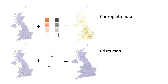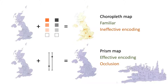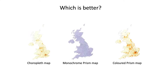So choropleth maps have a familiar encoding for numeric value; however, it is not the most effective. Prism maps, by contrast, use height to encode value, which is more effective, but the 3D effect can lead to occlusion. It is also possible to use both color and height to encode the values associated with areas in such maps.